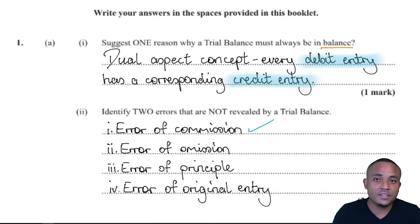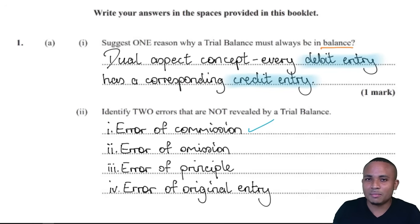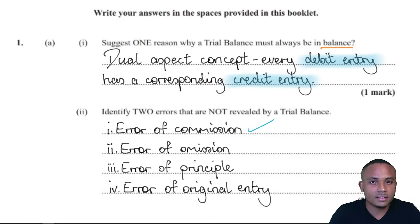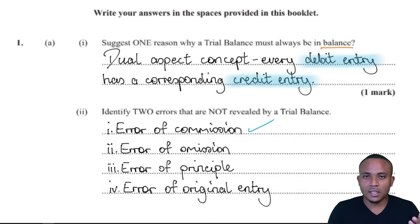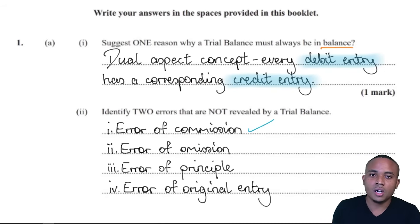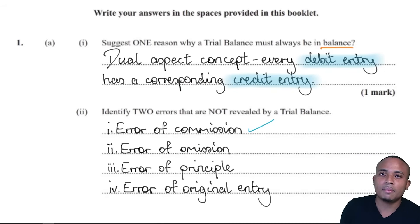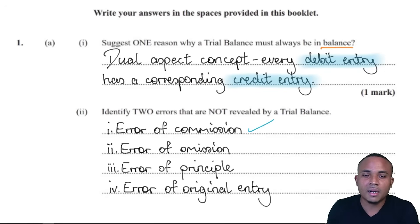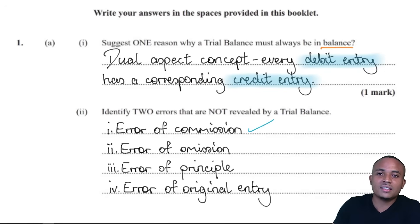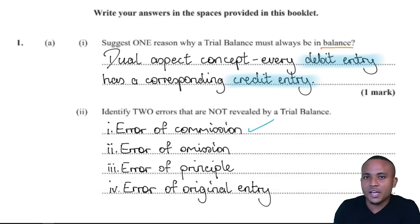The error of commission is where information is entered in the wrong account but in the correct type of ledger. For example, a business sold goods to Mark Anthony (with a C) for 200 on credit, so we debit Mark Anthony's account for 200. However, instead of entering it into Mark Anthony with a C, we entered it into Mark Anthony with a K. That is an error of commission.